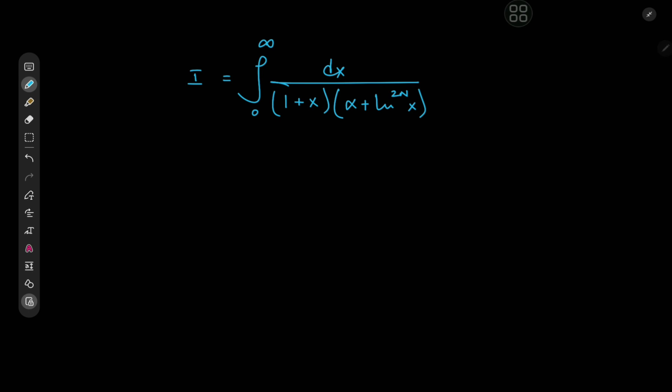Greetings people of Middle-earth. Kamal here with a very interesting integral. We have the integral from 0 to infinity of dx divided by 1 plus x times alpha plus log to the 2n of x, where n is of course a positive integer.